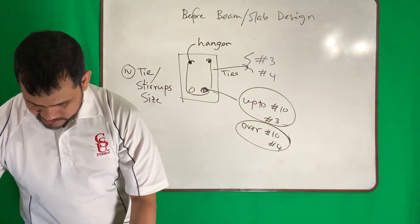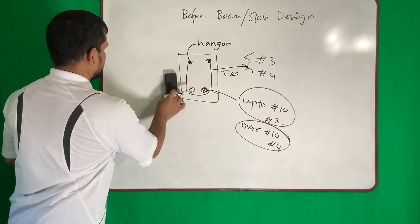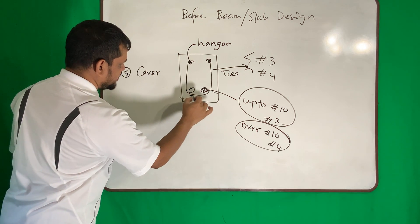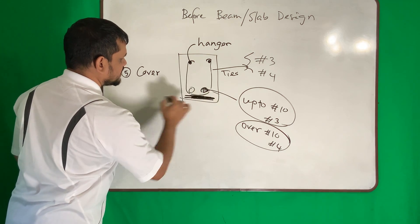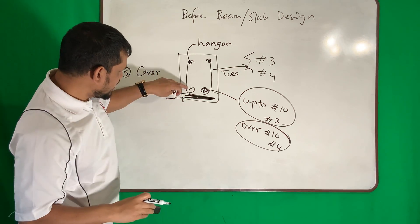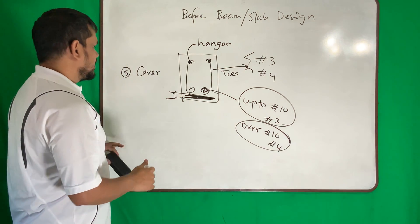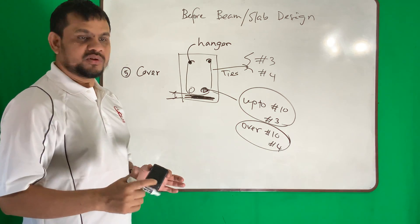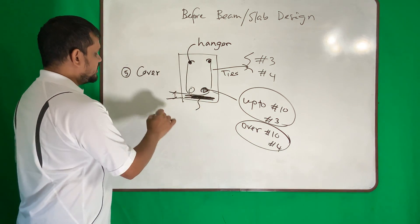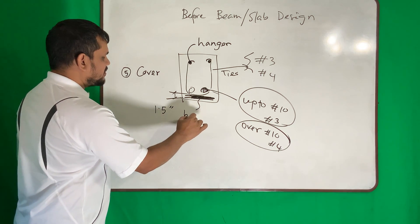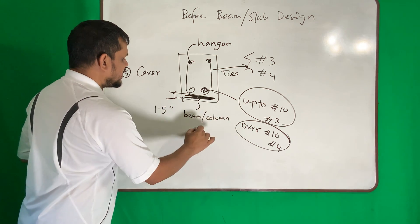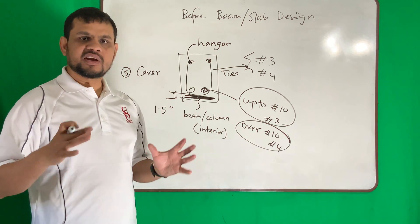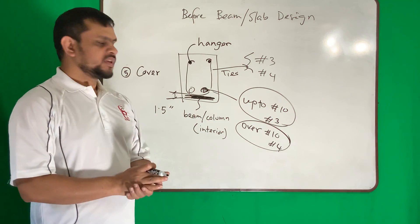Number five is cover — what should be the distance from the outside of the reinforcement to the concrete surface? We provide this cover to protect the bar from corrosion so water doesn't reach it. For beam and column in an interior environment with no chance of water exposure, 1.5 inches is the recommended cover.